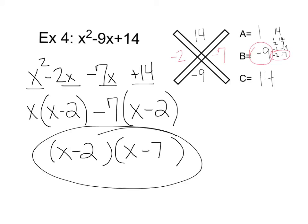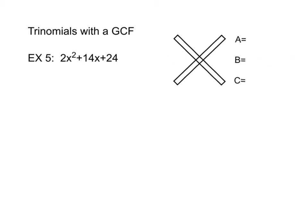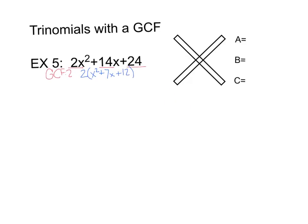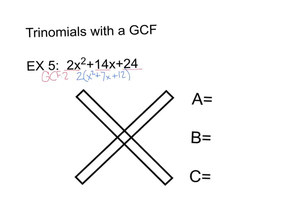Let's look at our next special case — a trinomial that has a GCF. In this case the GCF is 2. The first thing we always have to do is pull that GCF out. So we pull out 2 and get 2 times x squared plus 7x plus 12. We always need to pull out our GCF before we deal with the ABC values in the x method.